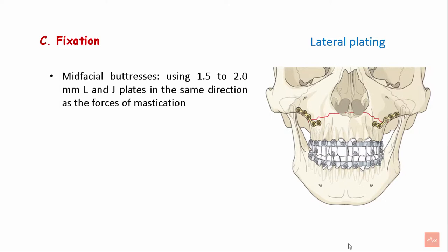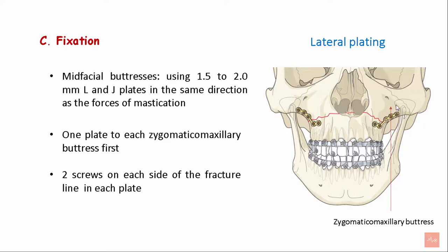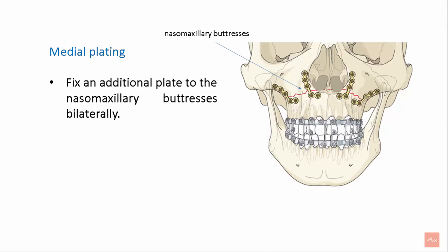Coming to fixation, it involves lateral and medial plating. Mid-facial buttresses are fixed using 1.5–2 mm L and J plates in the same direction as the forces of mastication. One plate is fixed to each zygomaticomaxillary buttress, with two screws on each side of the fracture line in each plate. For medial plating, the nasomaxillary buttresses are fixed by placing additional plates on either side.